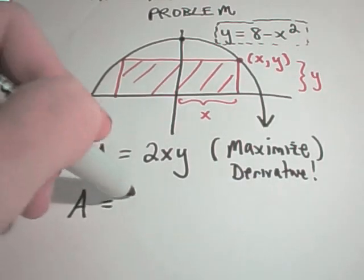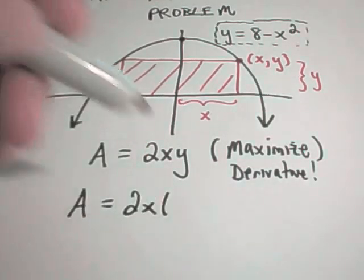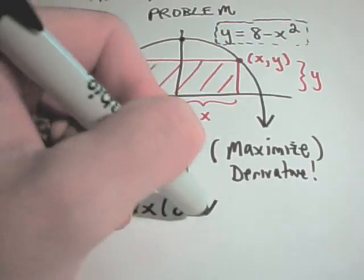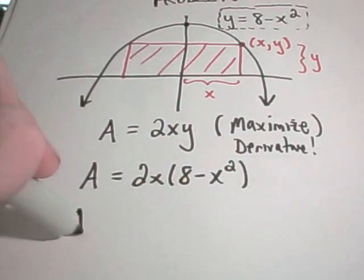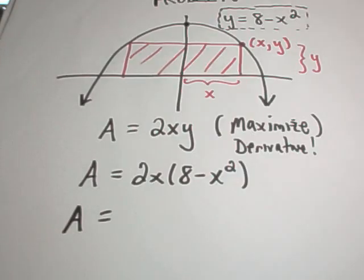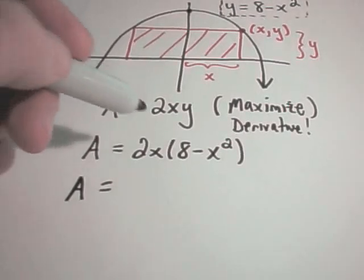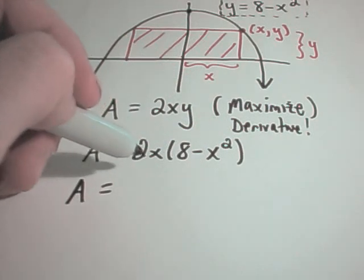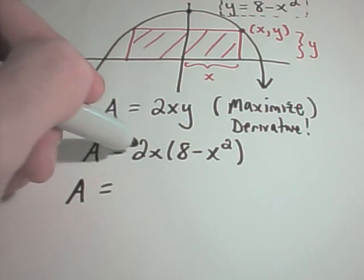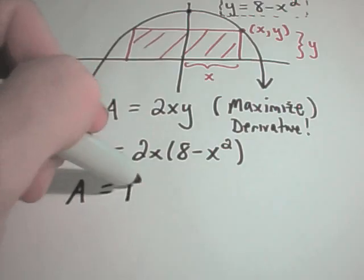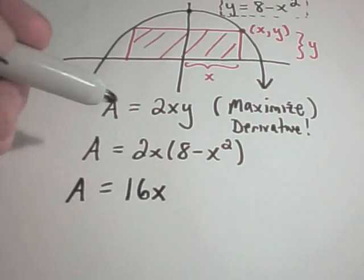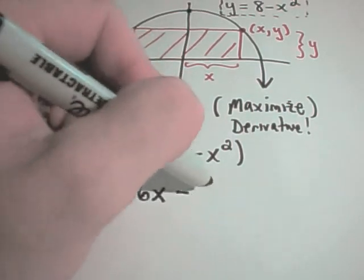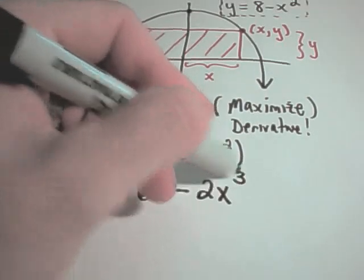Alright, well then, easy enough, it says the area then is going to be 2x times y. Again, y being 8 minus x squared. So, you could go ahead and take the derivative of this using the product rule, but anytime you can clean up the thing you have to take the derivative of, it will make taking the derivative much easier. So, 2x times 8 is 16x. 2x times negative x squared is negative 2x to the third.